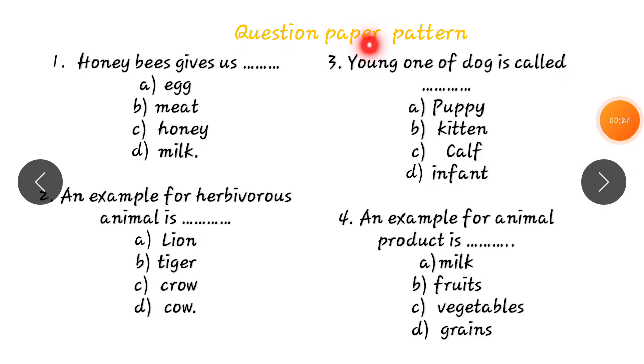Question Paper Pattern. Children, in FA 1, 20 questions are there. 20 questions are also multiple choice questions. That means, each question has 4 options.